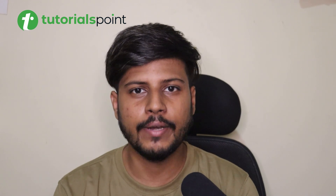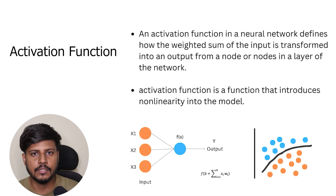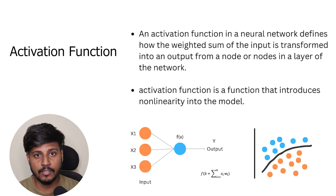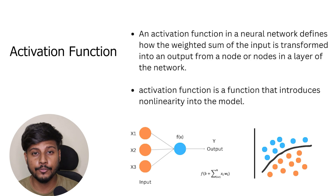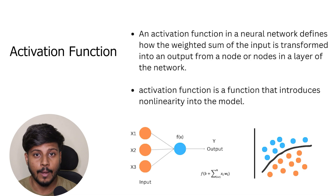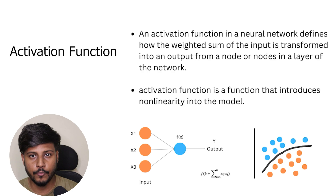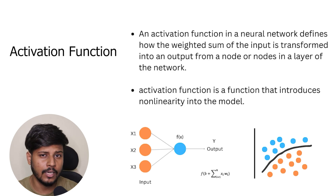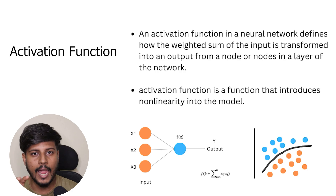Welcome back. In this lesson you're going to learn about activation functions — what they are, why we need them, and different types of activation functions. An activation function is a mathematical function that introduces non-linearity into the neural network's output. It is typically applied to the weighted sum of the inputs of the neurons and determines the output — whether a neuron will be activated or not.